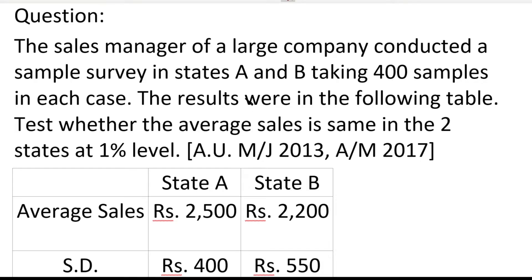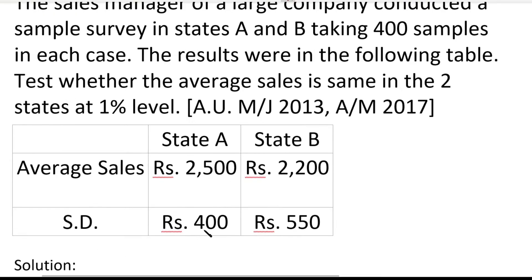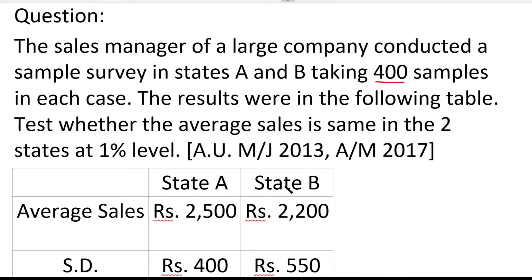In this question, we check two states — state A and state B — each with 400 samples. In state A, the average sales is 2,500, and in state B, the average sales is 2,200. In the first population, the average sales are represented by mu1, and in the second population, by mu2.